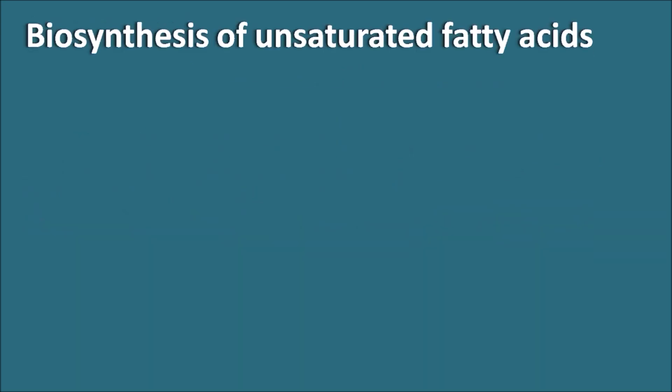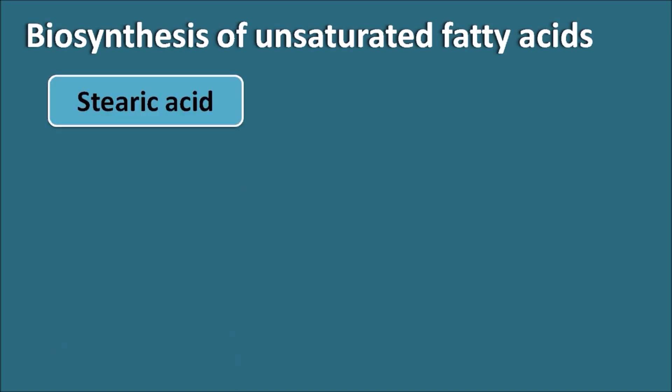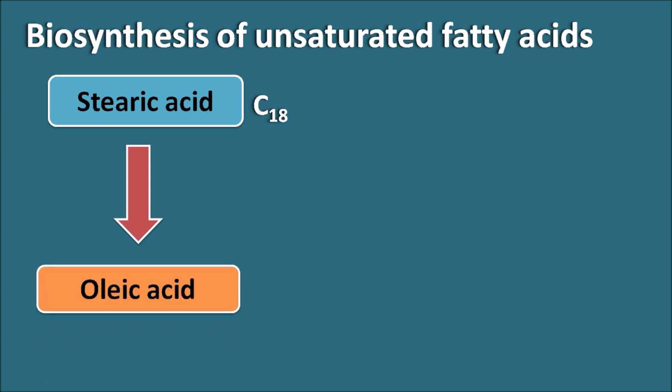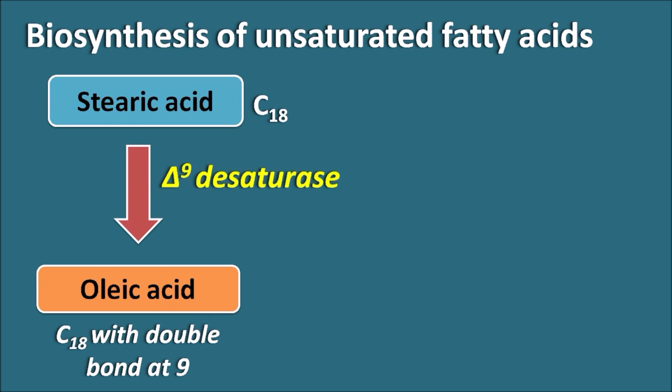Now let us see the biosynthesis of unsaturated fatty acids. Stearic acid is a C18 saturated fatty acid that can be converted into oleic acid, which is a C18 unsaturated fatty acid with a double bond at the ninth position. Stearic acid is converted to oleic acid by the enzyme delta-9 desaturase, which introduces a double bond at the ninth position. Oleic acid is the first unsaturated fatty acid that can be biosynthesized within the body.